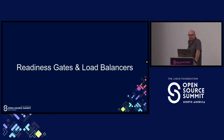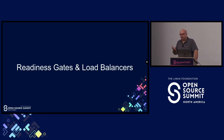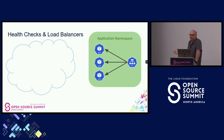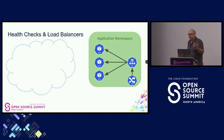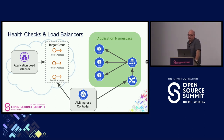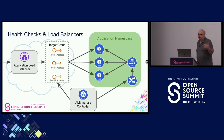Now let's talk about readiness gates and load balancers. After all that process of starting the pod and having it become ready, you need to expose it outside your cluster to receive outside traffic. Here we see a typical namespace with three pods and a service. Once those pods have gone through the pod startup lifecycle and are ready, we create an ingress object. On a cloud provider like AWS, a controller creates the load balancer and adds the IP addresses of the pods into the target group of the ALB. Once this is all set up, traffic can come into the ALB and be directed to the set of pods.